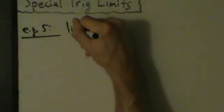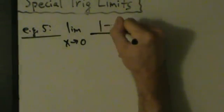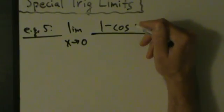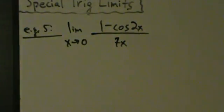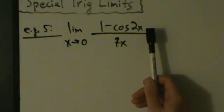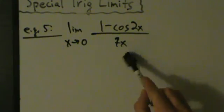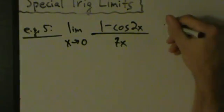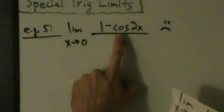Example 5: the limit as x approaches 0 of 1 minus cosine of 2x divided by 7x. If we try direct substitution: 1 minus cosine of 2 times 0 — cosine of 0 is 1 — so we get 1 minus 1 equals 0 on top, and 7 times 0 equals 0 on the bottom. So we get 0 over 0. There's a trig function here, so we think: special trig limits.